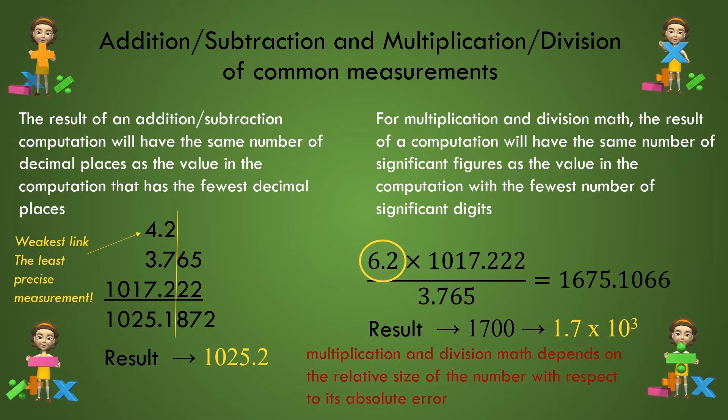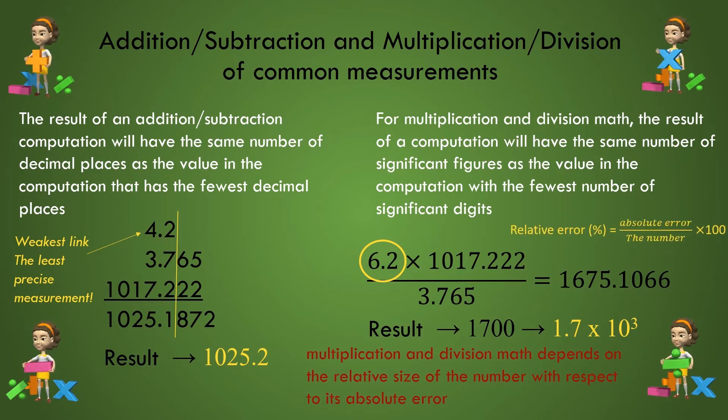This is called the relative error, and we get it when we take the absolute error and divide by the magnitude of the number itself. Now, we don't know the absolute error of these numbers here exactly, but we can get a rough estimate of them. The absolute error of the 6.2 value in the computation must be in the tenths position because we always assume that last value contains the uncertainty of the measurement.